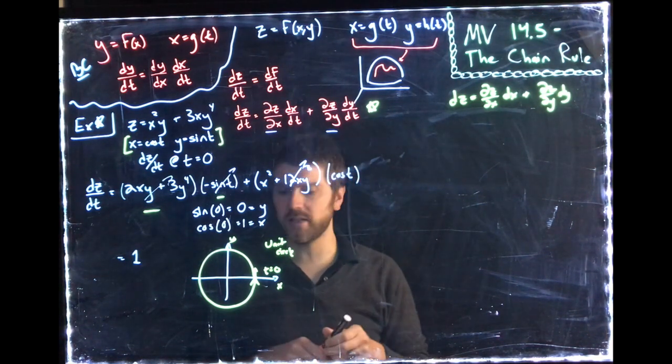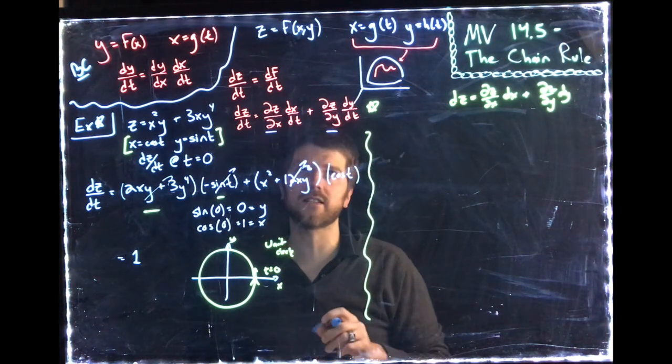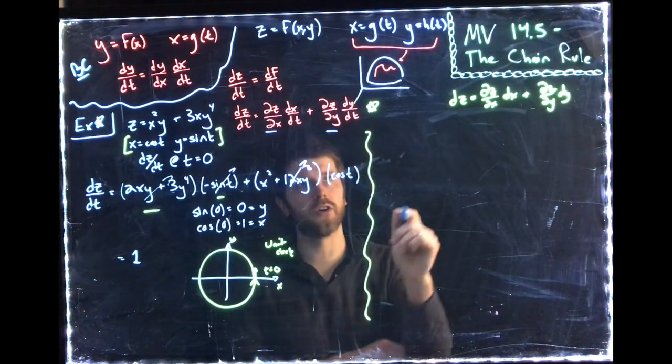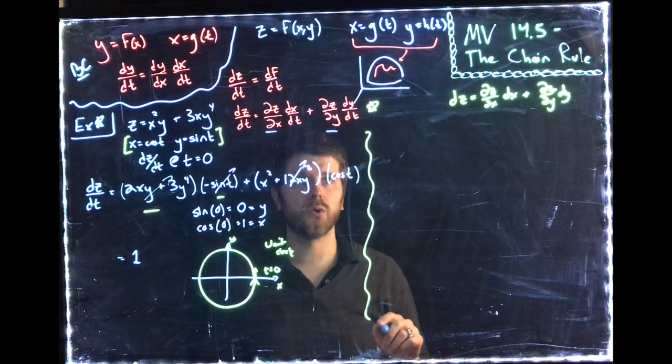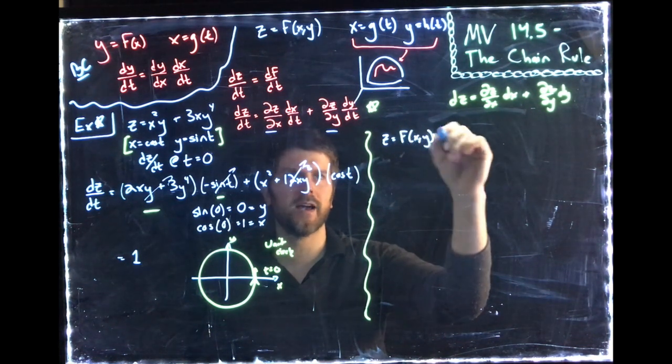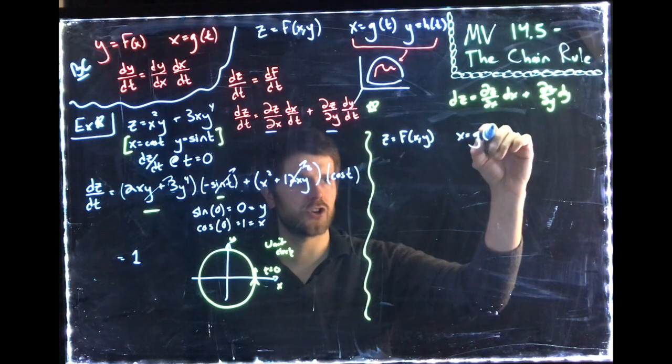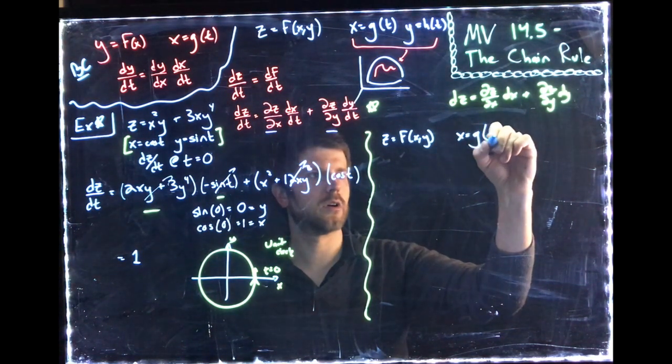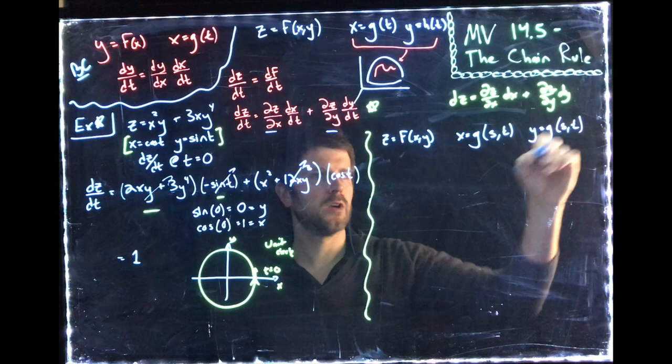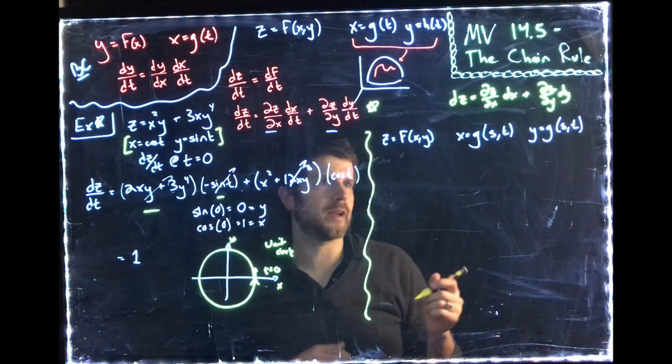Now, there is one other case that we need to consider here before we close up this chapter, which is there's no reason necessarily to expect that x and y would depend on just one thing. So what happens if we have z equals f of x, y, but now x is changing as a function of two variables, s and t. And so is y.